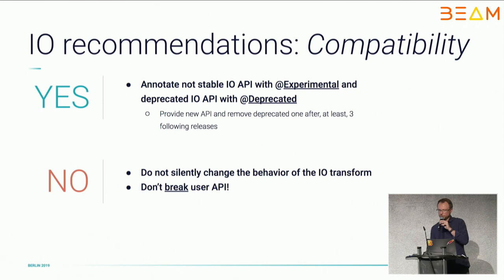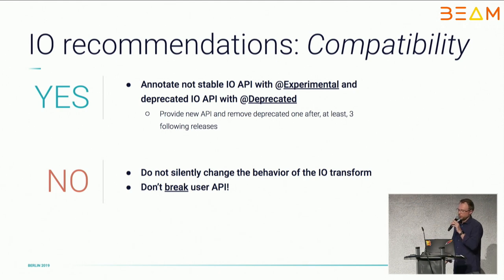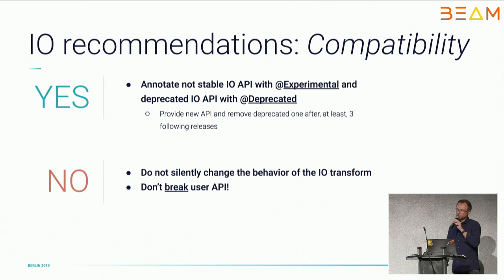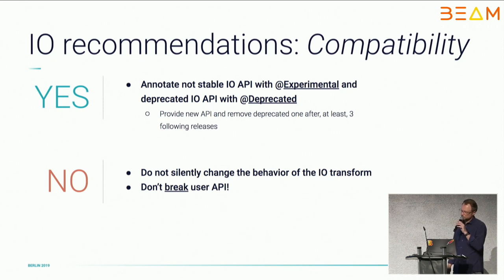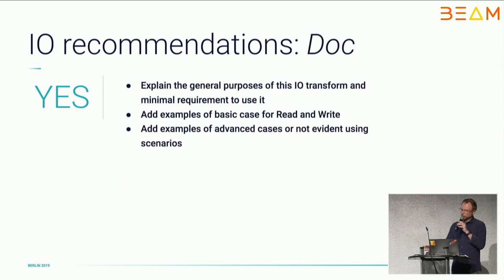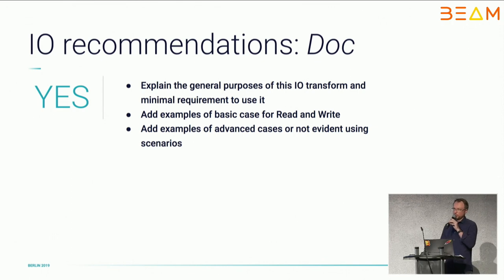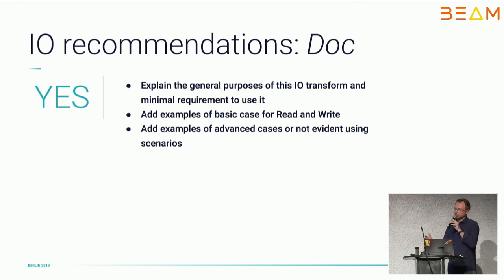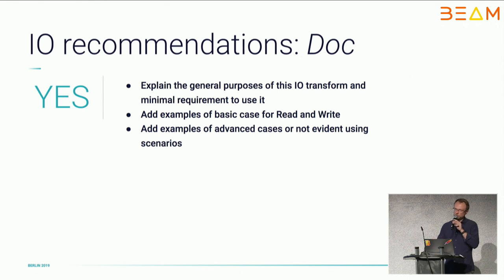For compatibility: if you write a new transform it should be marked with an experimental annotation. If you update or change the API of an already existing transform, just deprecate those public methods and alongside the deprecated methods provide the new API. After several releases — minimum three — the deprecated API can be removed. Don't silently change the behavior of a transform, don't break the API, and your users will be happy. For documentation: explain the general purpose of your transform, provide a minimal example of how to write your transform for read and write, and if it contains some non-obvious or more complicated cases, provide examples for those as well so it's easier for users.